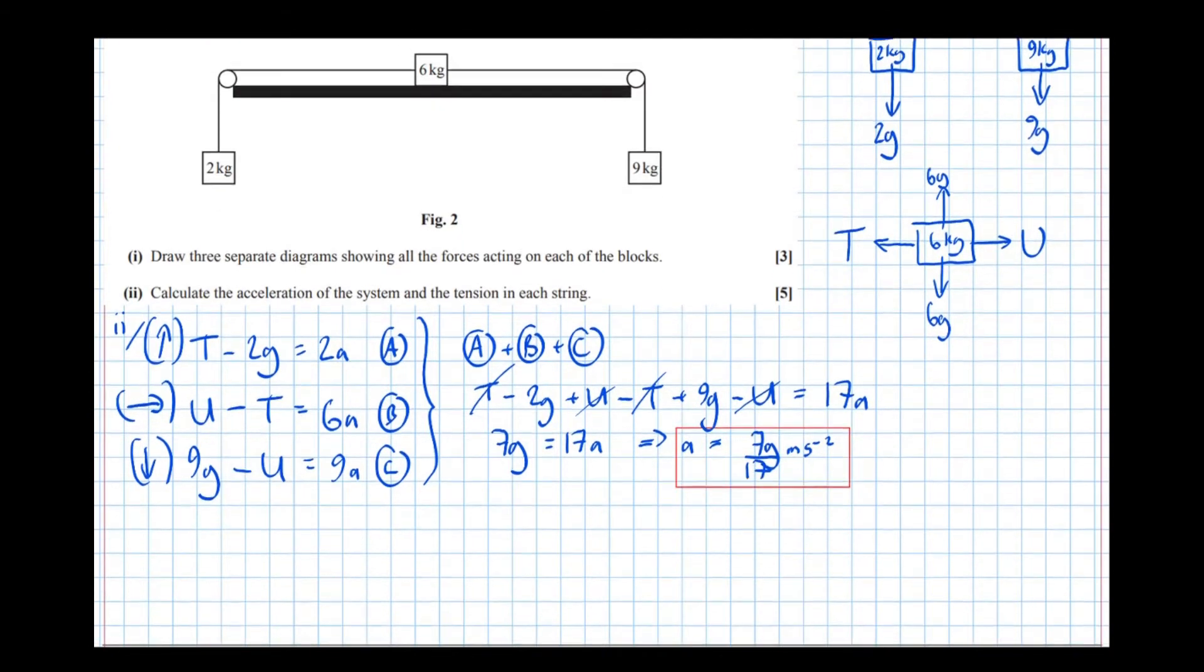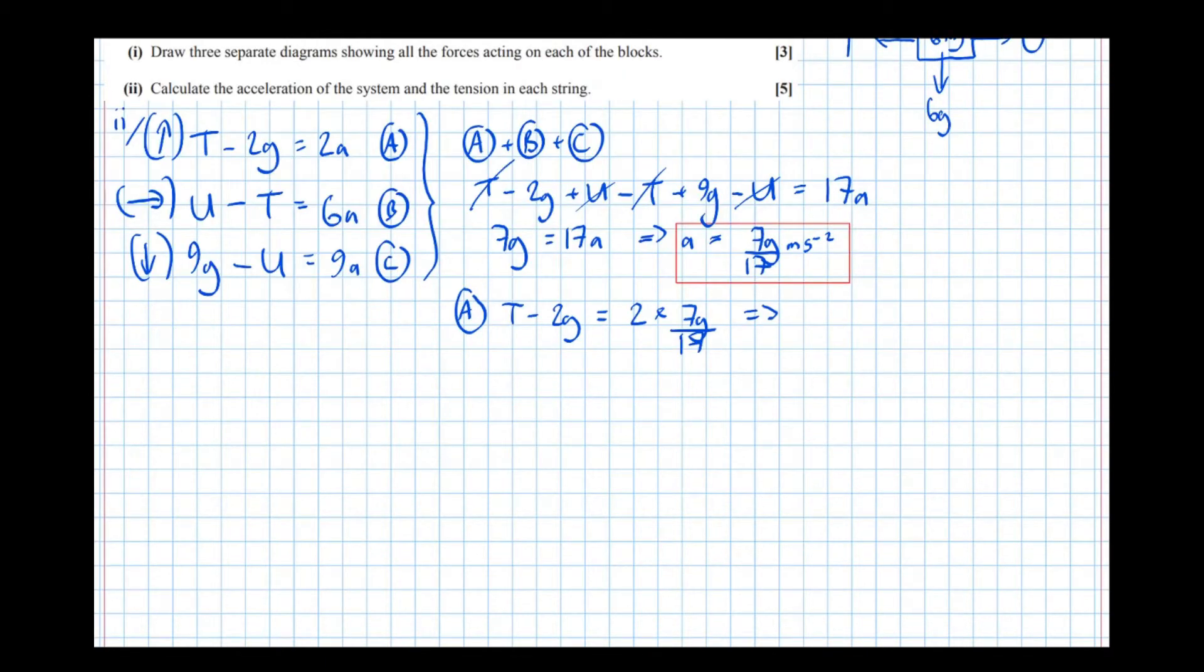So now to find the tension. Well if I look back to the first equation, I see that T take 2g, so A is T take 2g equals 2 lots of the acceleration, equals 2 times 7g over 17. Which means that T equals 14g over 17 plus 2g.